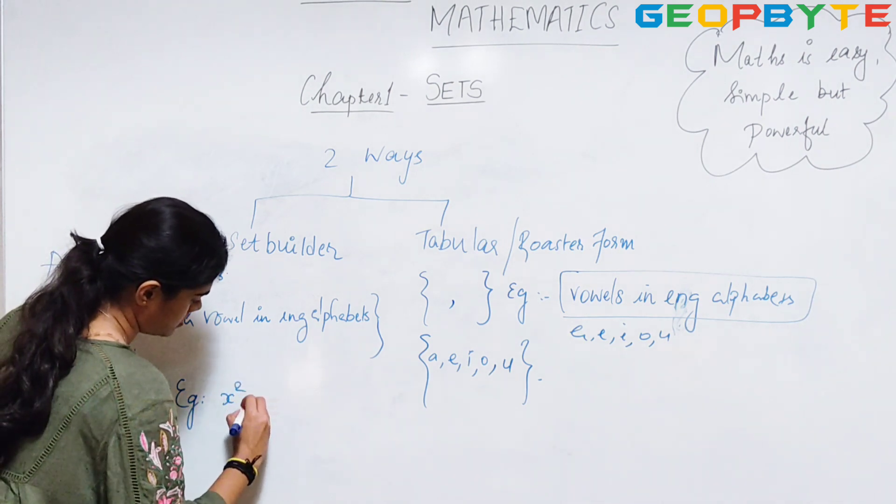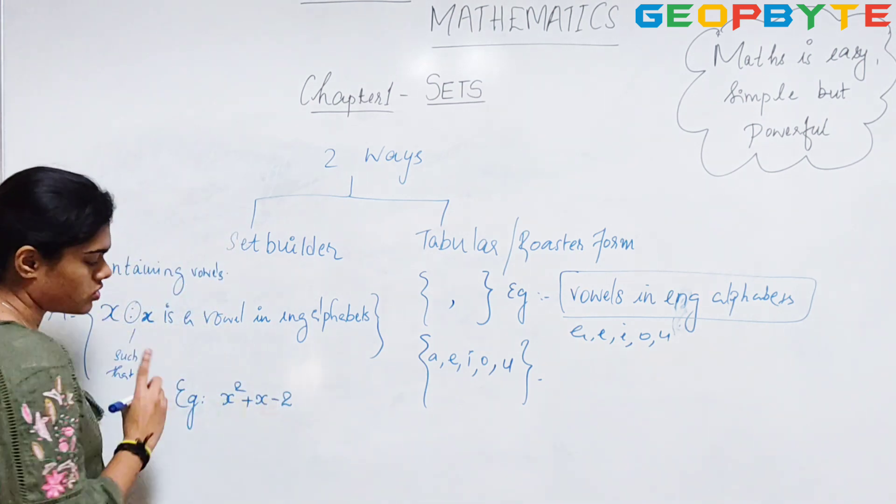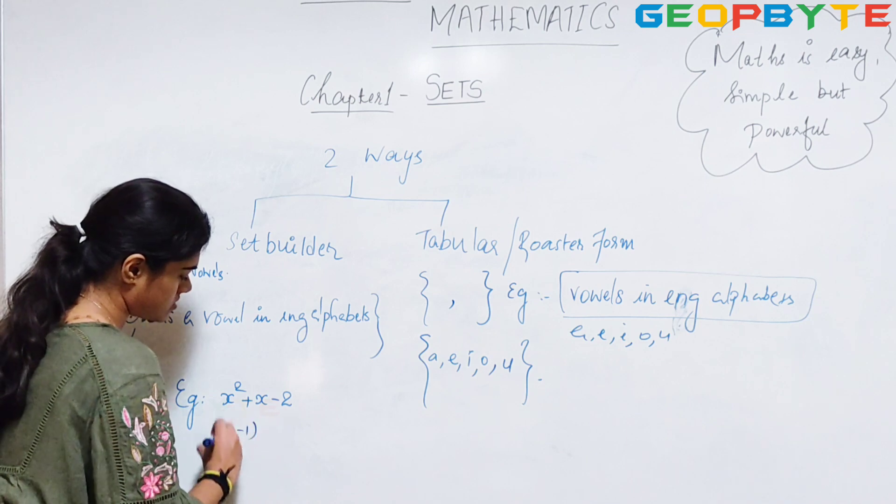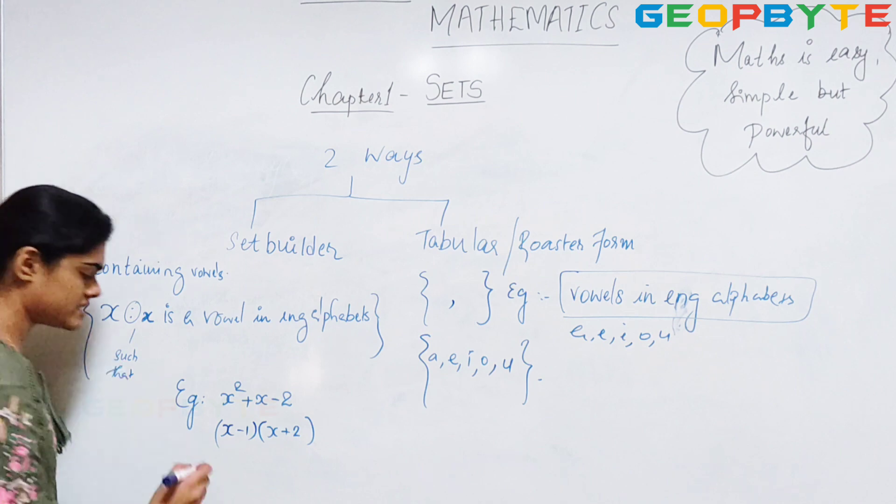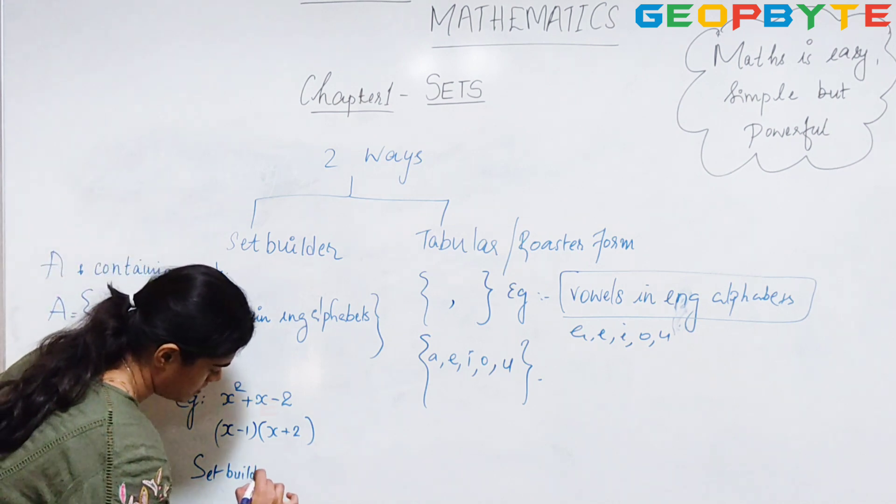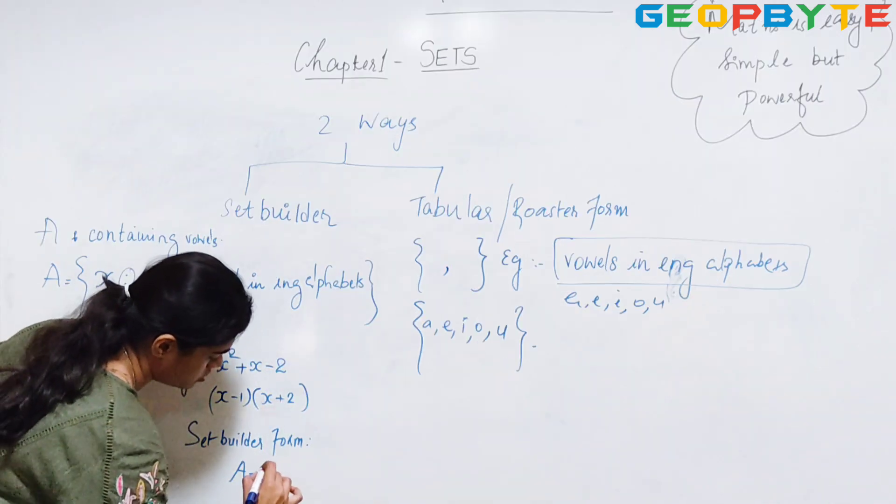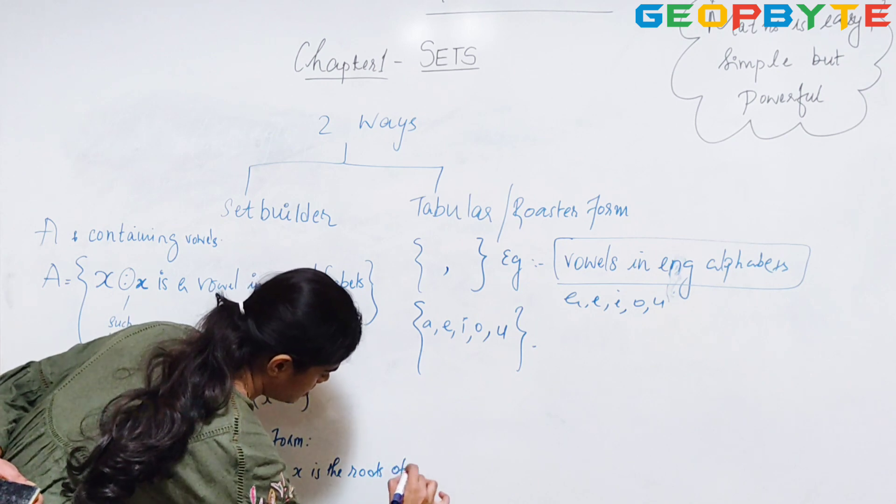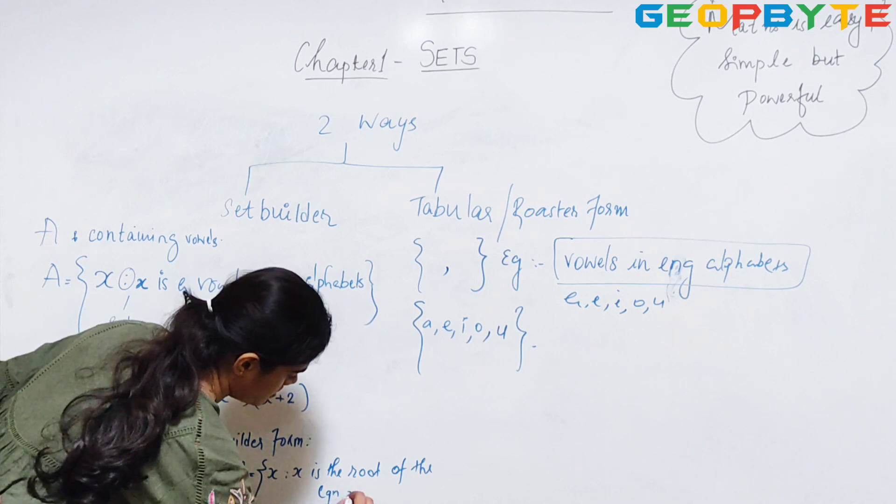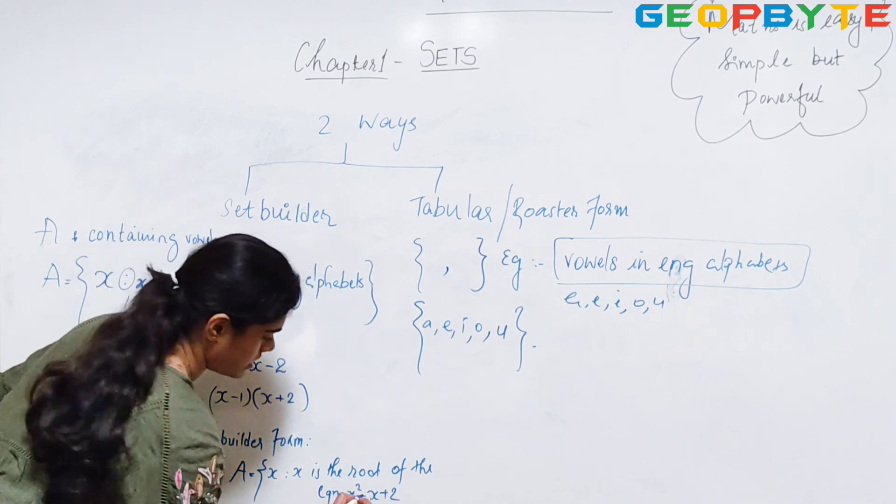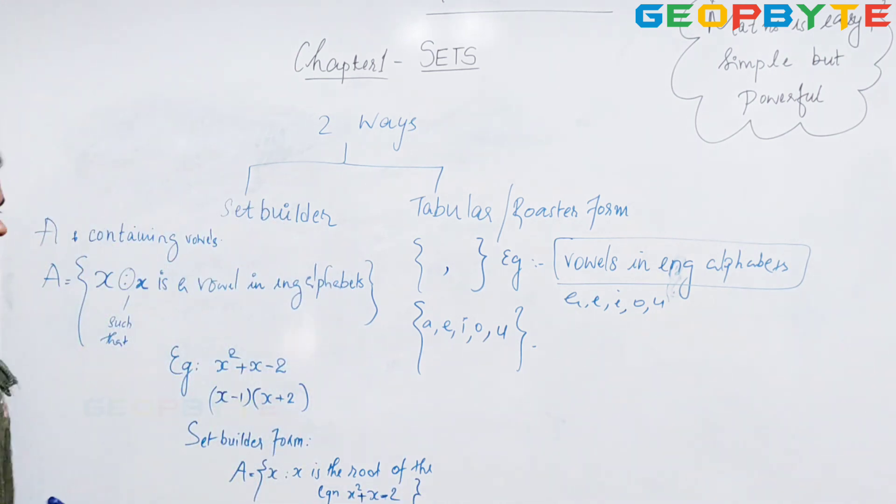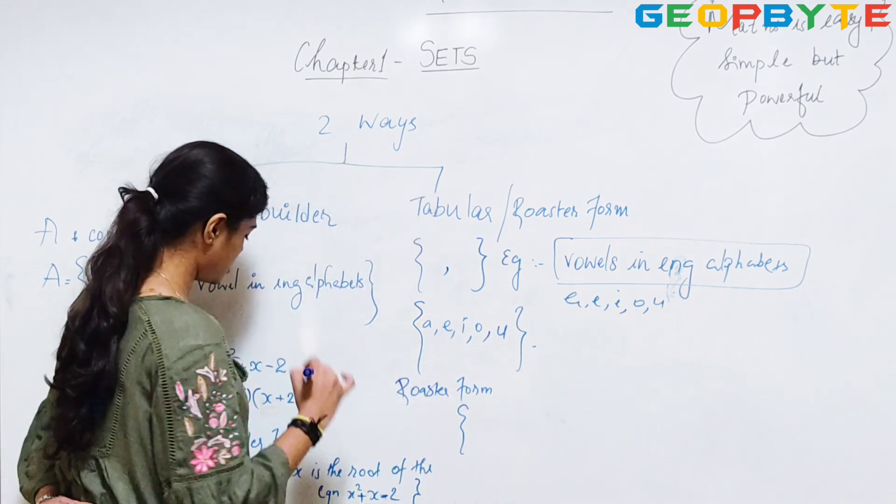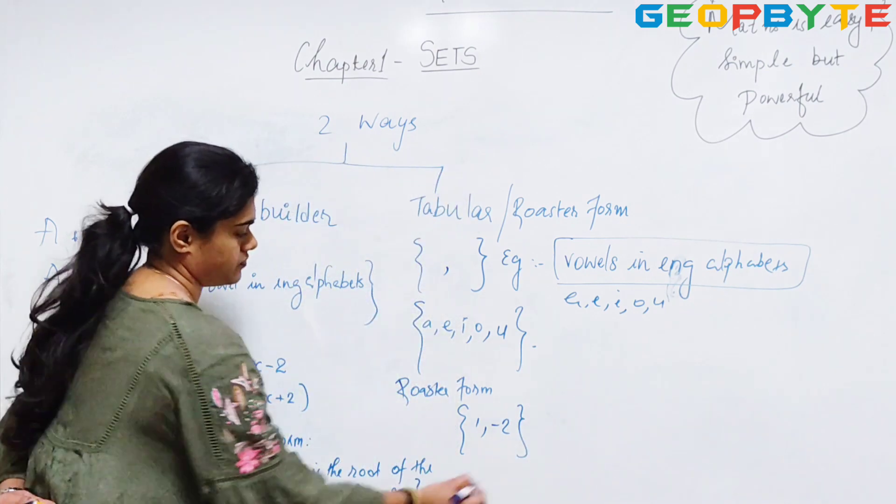Another example: X square plus X minus 2. I hope you guys know how to find the roots of this equation. My roots of the equation will be X minus 1 and X plus 2. How will I write it in set builder form? A equal to X such that X is the roots of the equation X square plus X minus 2. And how will I write it in roster form? The roots are 1 and minus 2.